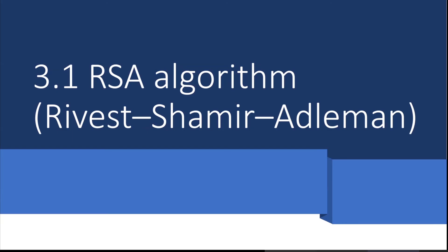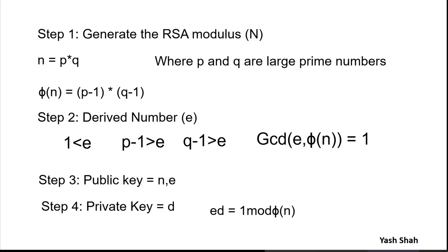RSA algorithm is a public key or asymmetric key algorithm. Let us see how RSA works. Step one: we have to generate n. We generate n by multiplying two large prime numbers. So n is equal to P multiplied by Q.